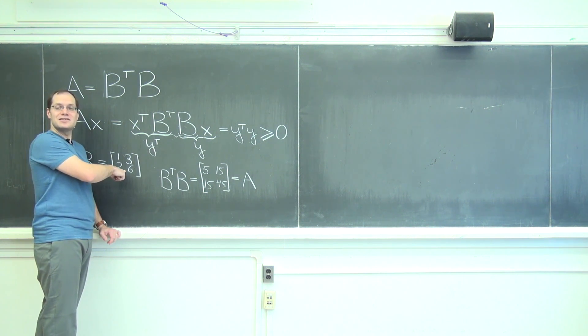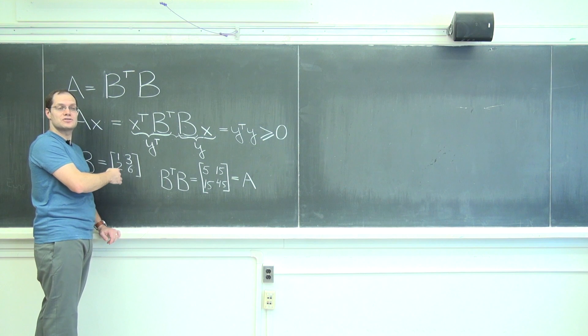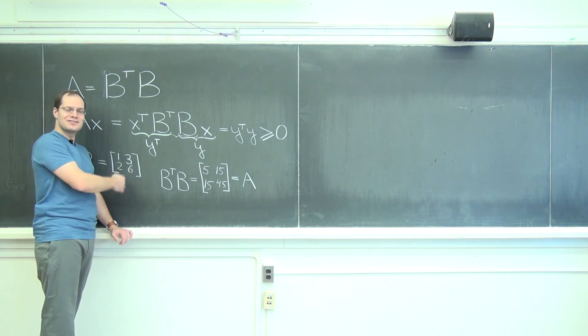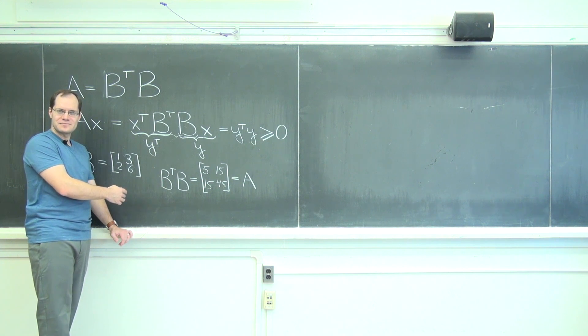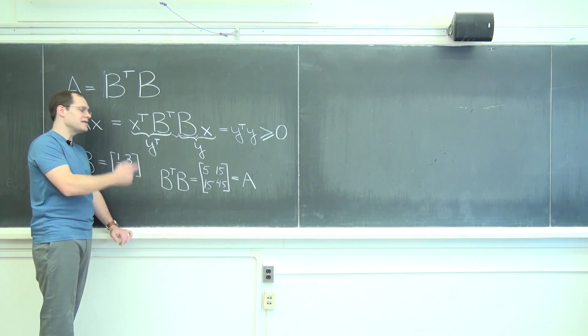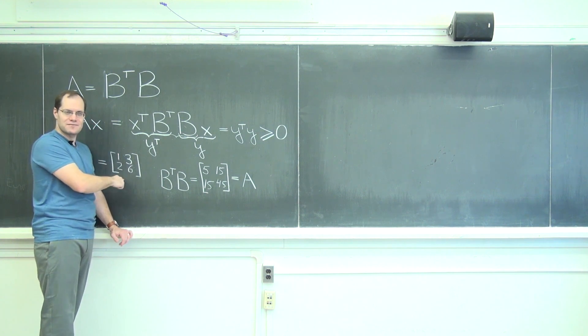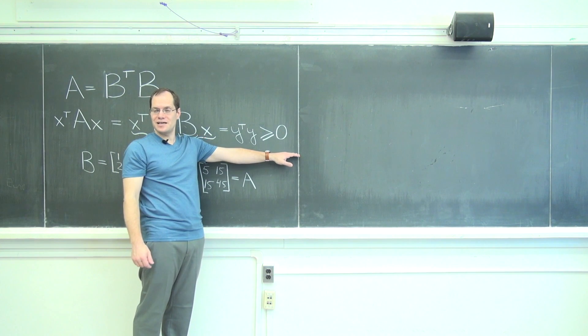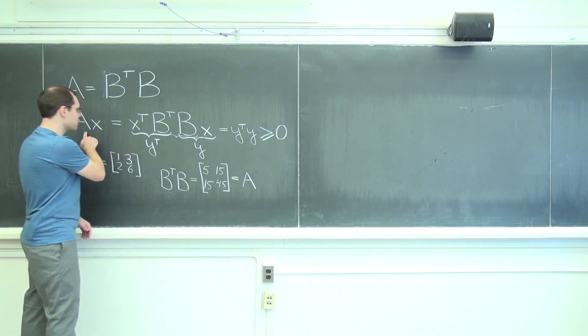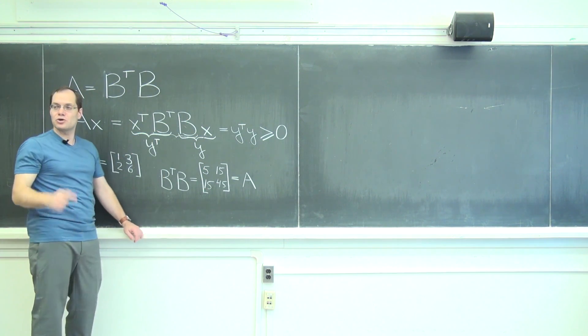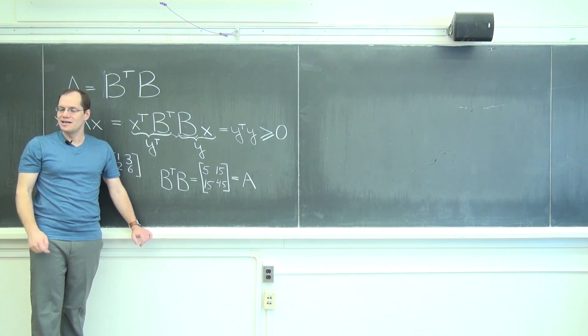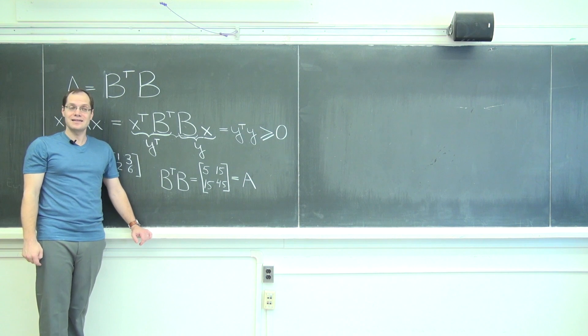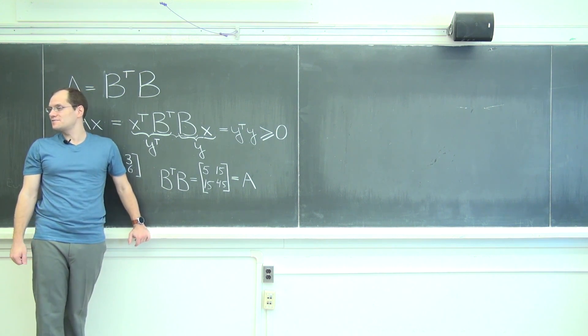And it's not really the singularity that matters, because it doesn't have to be a square matrix. It just has to have linearly dependent columns. If it has linearly dependent columns, then there will be an X from the null space of the matrix for which you get 0 and not a positive number. And so the quadratic form A, which is B transpose B, is only positive semi-definite. And if the columns are linearly independent, then the resulting quadratic form is positive definite.